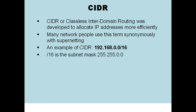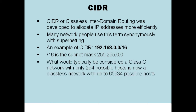Usually, if you see 192.168, you're thinking Class C — triple 255 subnet mask — but that slash 16 tells us we're using a Class B subnet mask for a Class C address. So what would typically be considered a Class C network with a maximum of 254 hosts is now a classless network with up to 65,534 possible hosts.